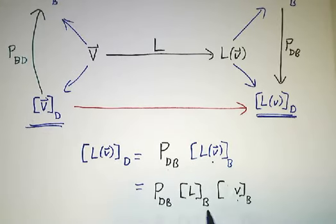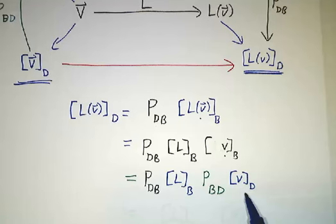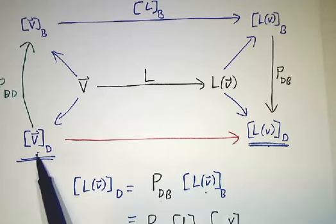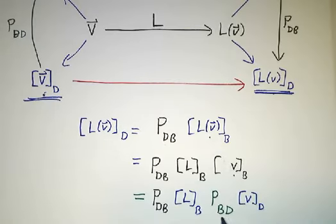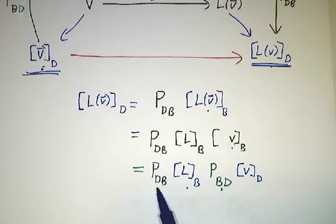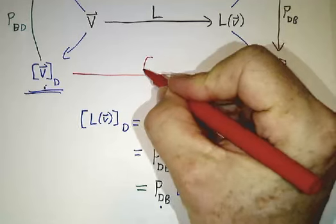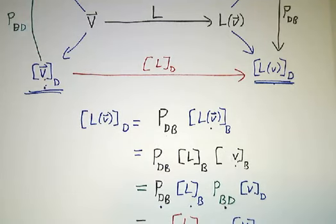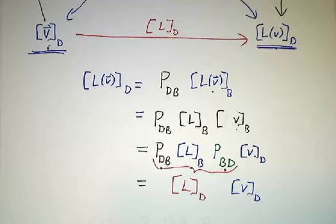The matrix of L in the b basis is what takes input in the b basis to output in the b basis. And the input in the b basis is a change of basis matrix times the input in the d basis. So if you want to start with the coordinates in the d basis and get the output coordinates in the d basis, you first apply Pbd, then you apply Lb, then you apply Pdb. Since L on the d basis is the machine that takes inputs in the d basis and gives outputs in the d basis, this product of three matrices must be L in the d basis.